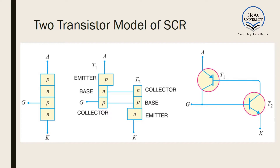The two transistor model of SCR is a simplified model. We know SCR has four regions: first is P-doped, then N, then P, and then N. According to this model, we divide the SCR into two parts. The first part is the PNP part — we can call this a PNP BJT — and the second part is the NPN part — we can call it an NPN transistor. So a single SCR can be divided into two transistors.